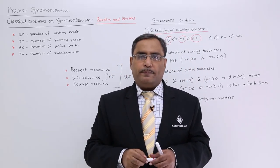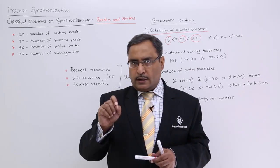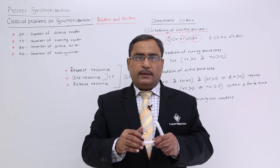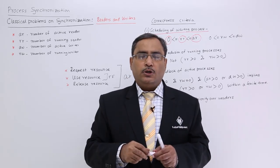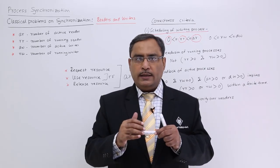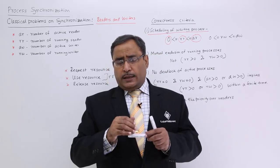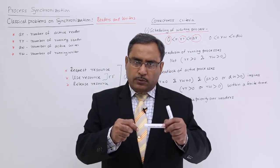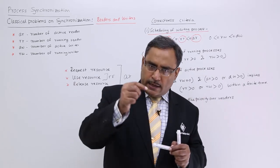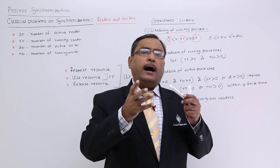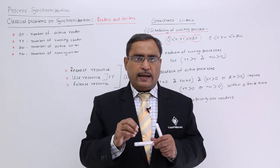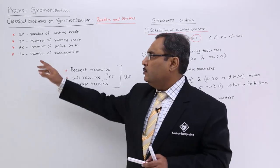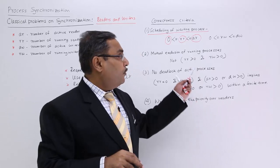In the readers-writers problem, reader and writer processes are going to read and write on the same variable, making variable access a critical section problem. We must put some synchronization and ordering on that access. We consider that the writer should have priority over the reader, because if the writer writes first and then the reader reads, the reader gets updated data. So writer process should have priority over reader process.